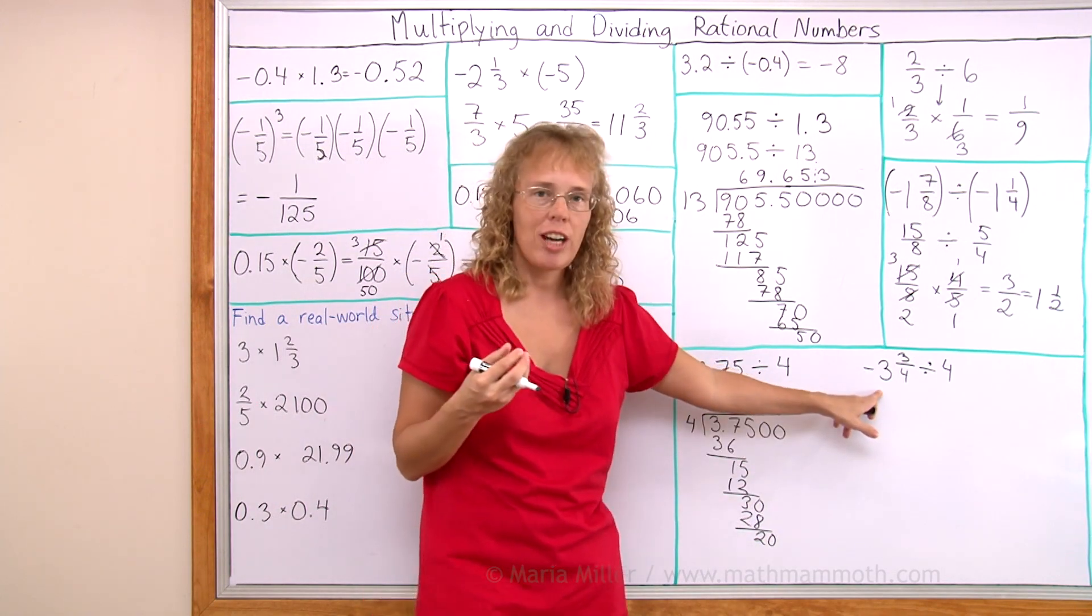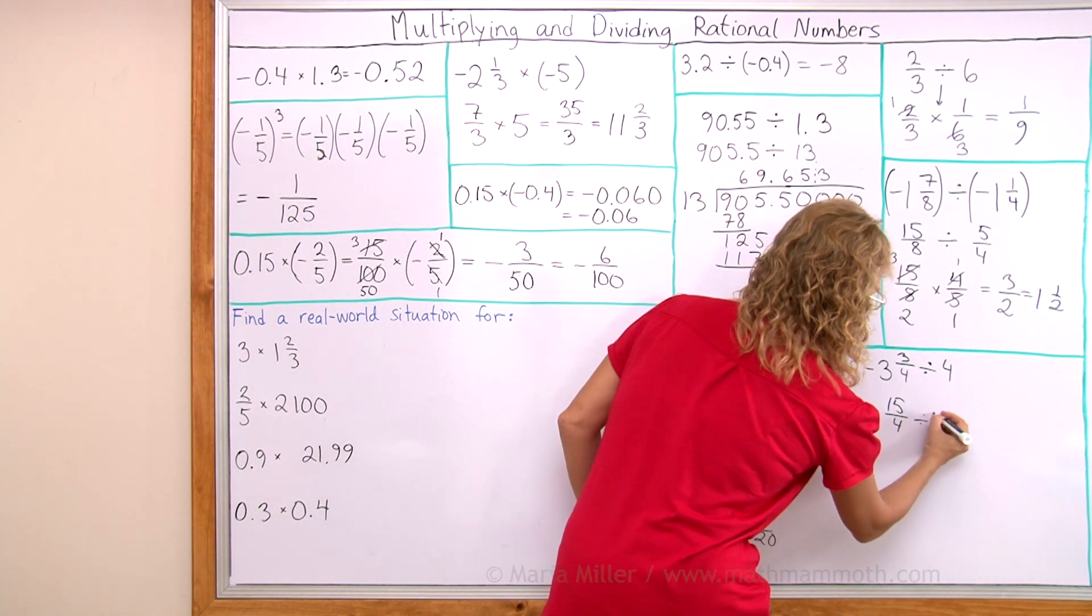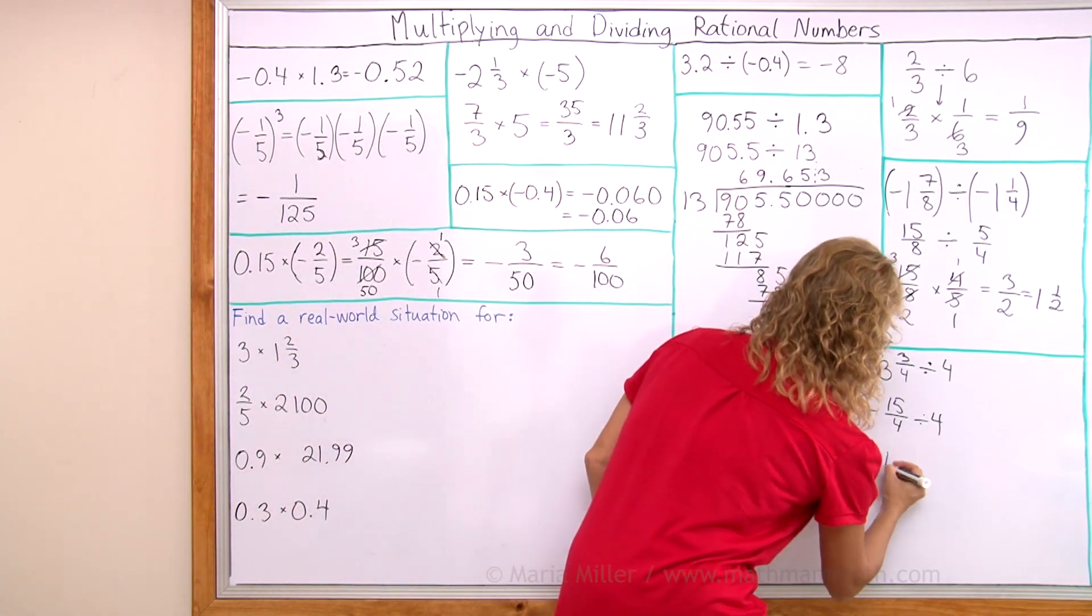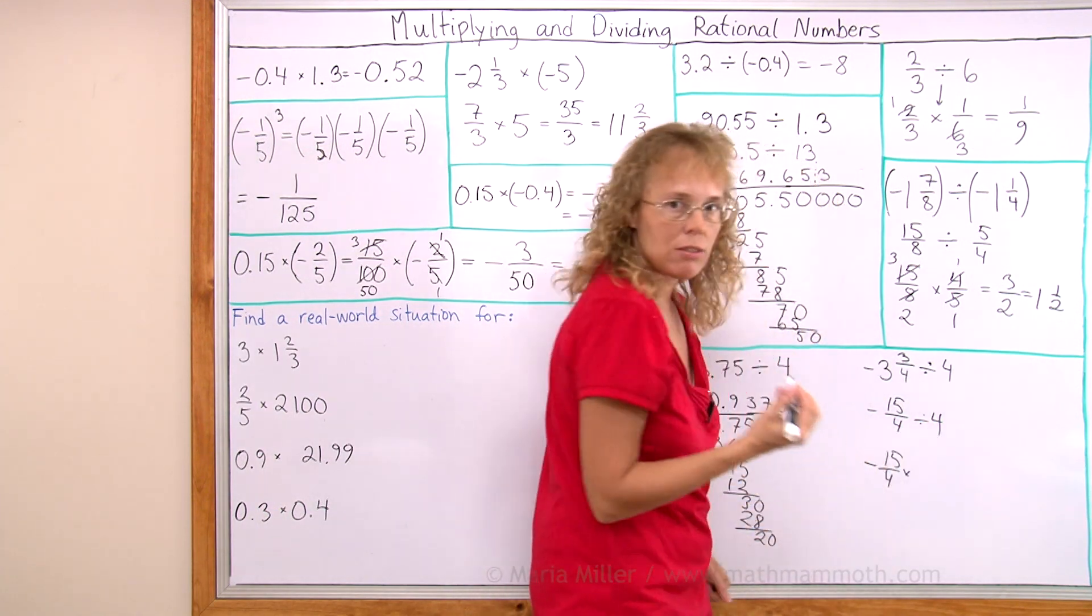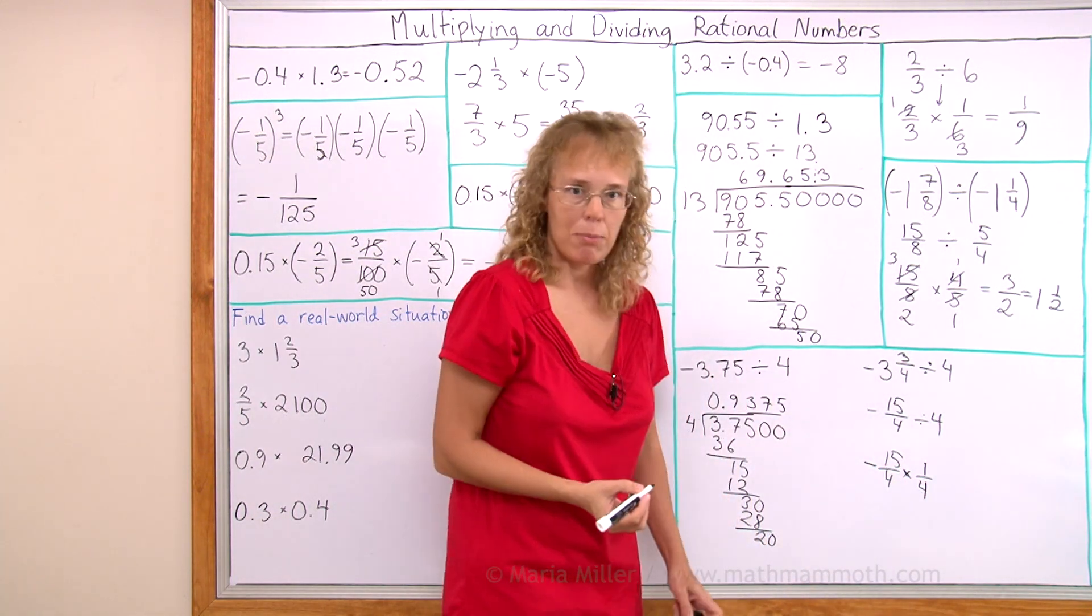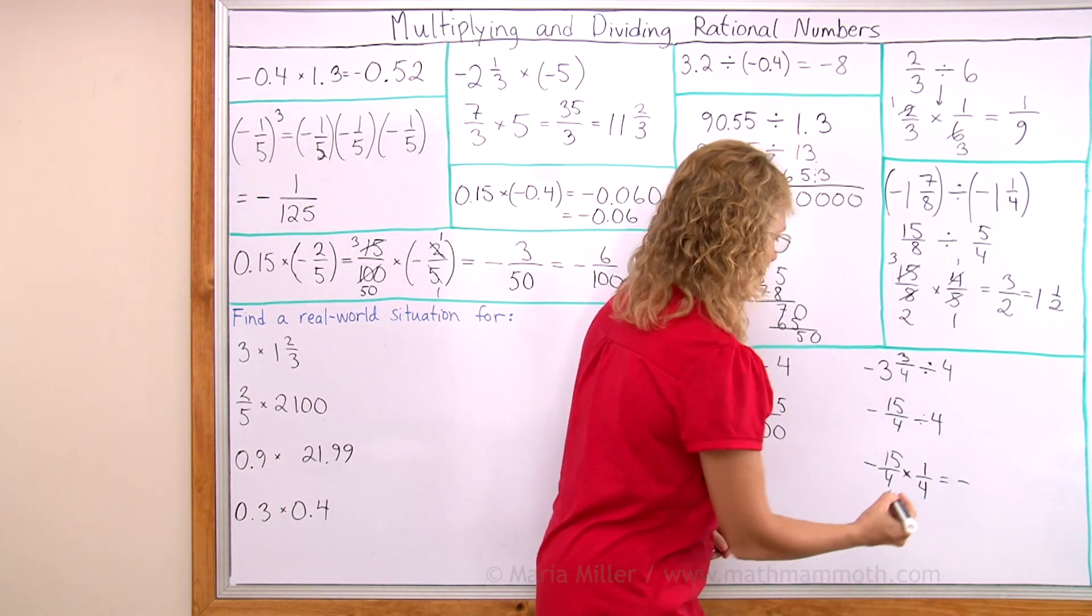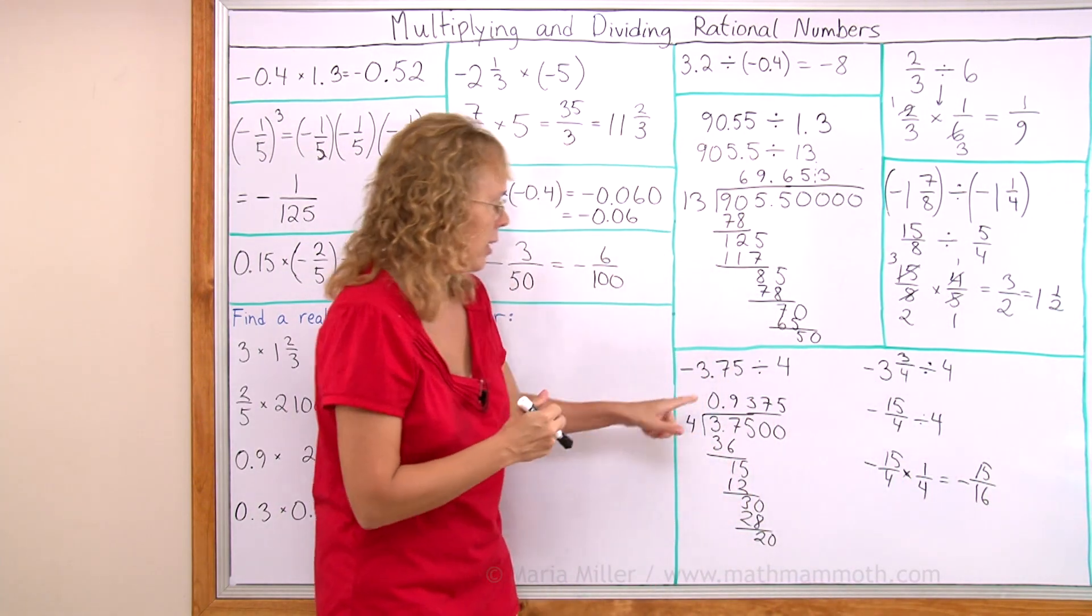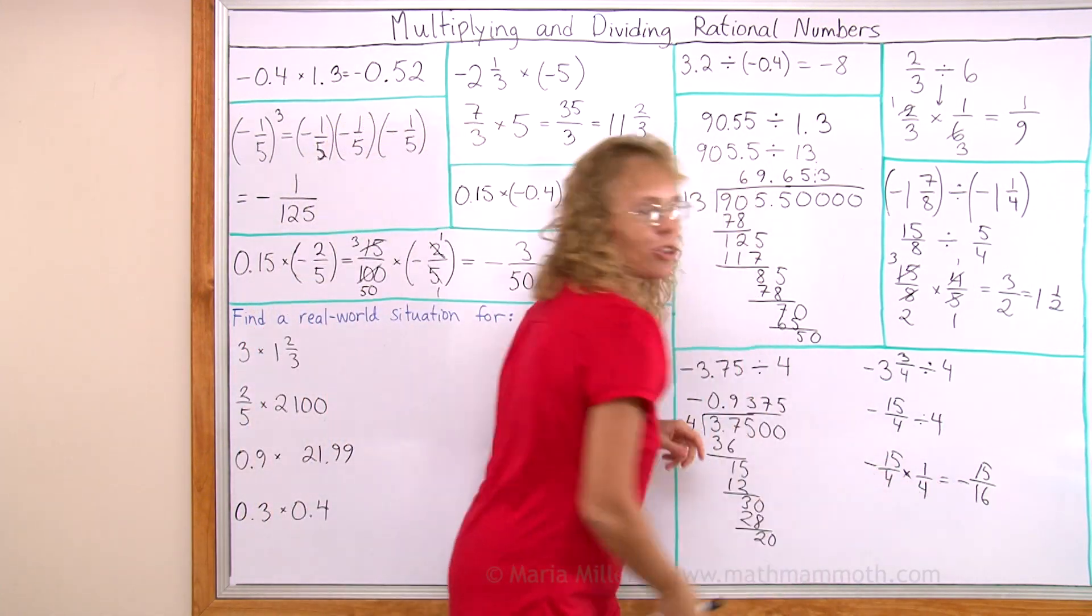Again, we need to change this into a fraction first. So there's negative 15 over 4, divided by 4. And now we change the division into a multiplication. Negative 15 over 4 times, and then this needs to change into its reciprocal number, 1 fourth. Flip it over, so to speak. Now we're ready to multiply. Nothing simplifies here. The answer will be negative, and we get 15 over 16. Negative 15 over 16. And this answer should be negative too. I'll put a negative sign there now.